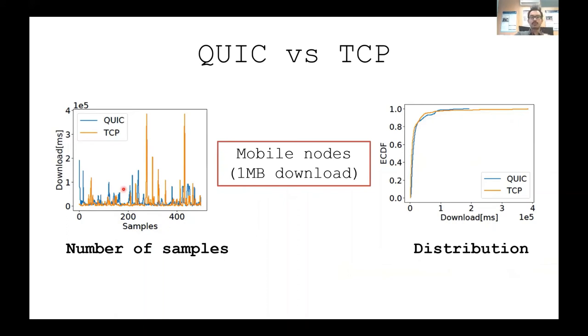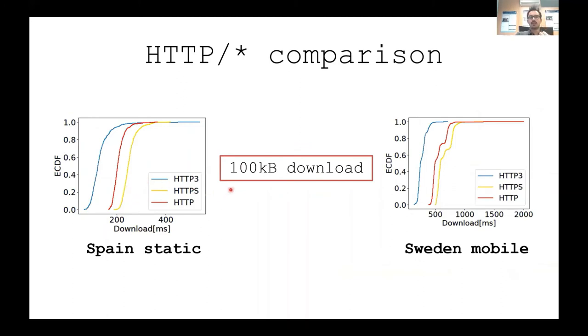Let's compare QUIC, the reason behind which is the HTTP. Let's compare it on the application layer. In this case, we have the static nodes in Spain and the mobile nodes in Sweden, with a 100 kilobyte download file, mimicking some kind of a webpage. As you can see here, in all cases, whether static or mobile, HTTP3 outperformed HTTP1 and HTTP2 in all cases. And this was really clear in this case. But still, we needed to understand more statistics about QUIC and HTTP3. Thus, we needed to look at the QLOGs.